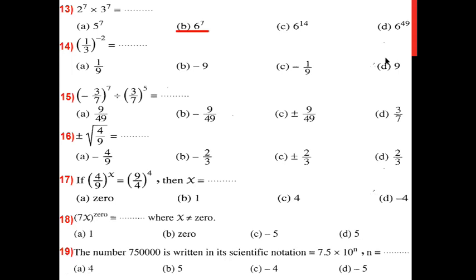So in number 14, which one is correct? Nine is correct — wonderful. So if I have a negative in the power, I will flip my fraction. If I want to cancel the negative, the fraction will be 3 up and 1 down. I flip the fraction: 3 over 1, power 2. 3 power 2 equals 9. So the answer is 9.